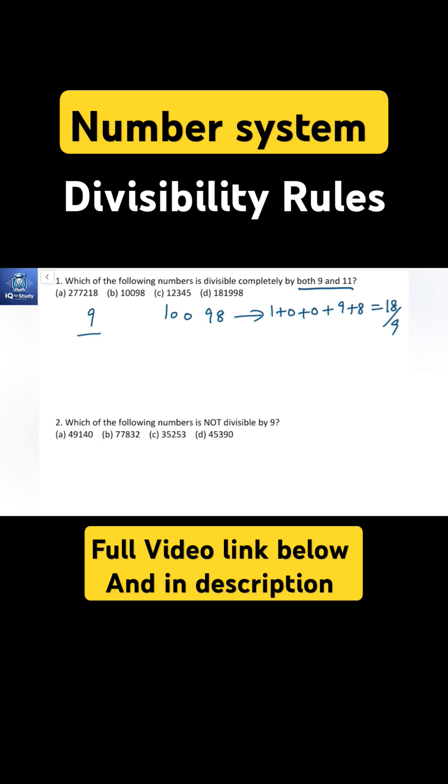So 9 follows. Next is 11. For 11, the sum of alternative digits—meaning the sum of even position digits minus sum of odd position digits—should be divisible by 11, or equal to 0 or a multiple of 11.